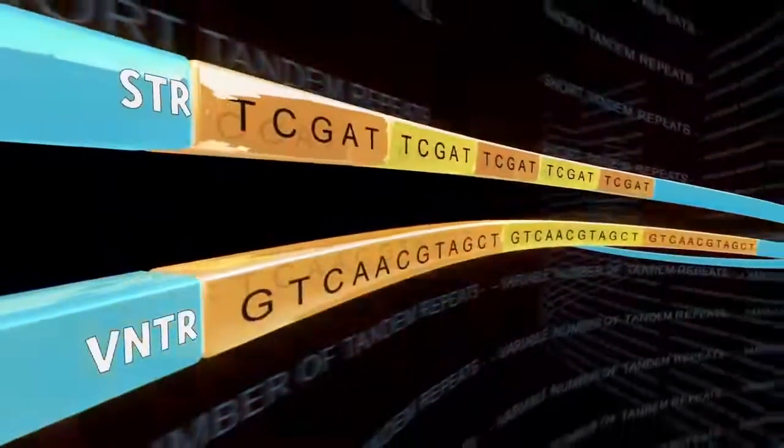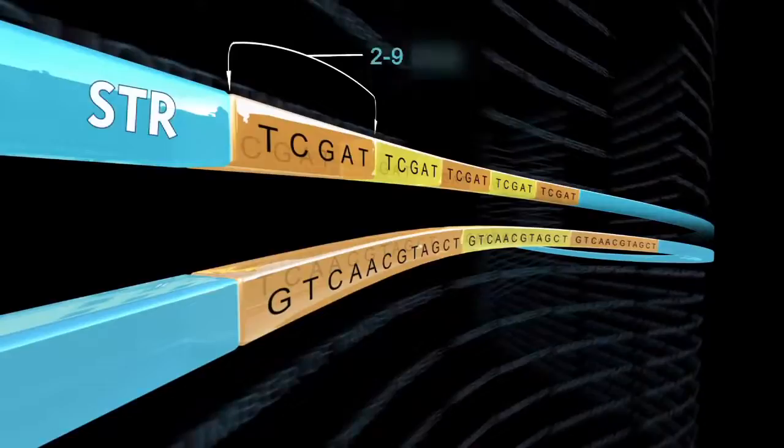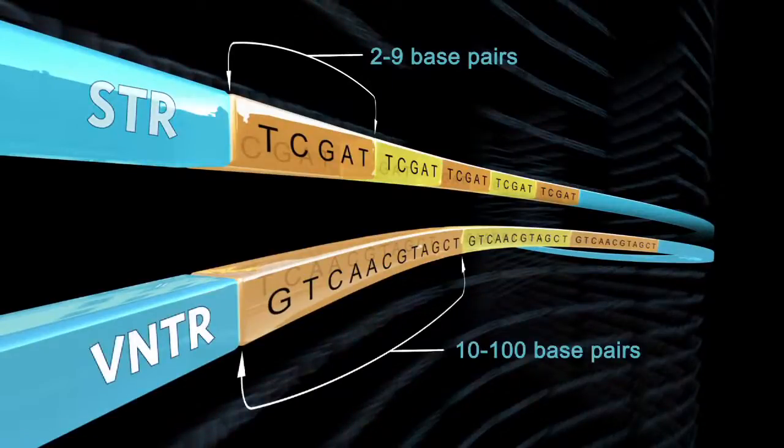VNTRs are similar to short tandem repeats, the difference being that in a VNTR the repeated sequence is longer, about 10 to 100 base pairs long.